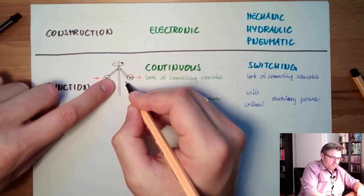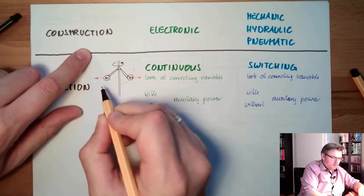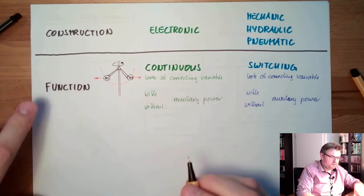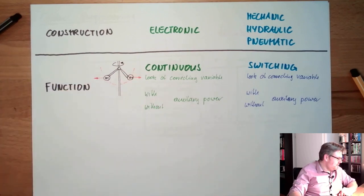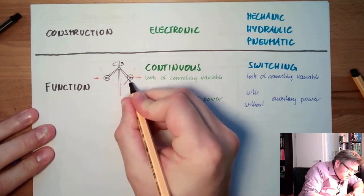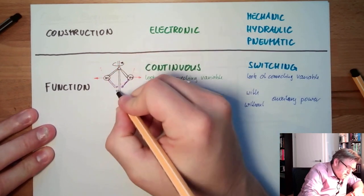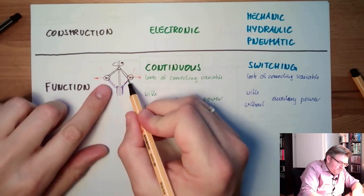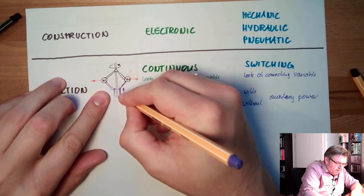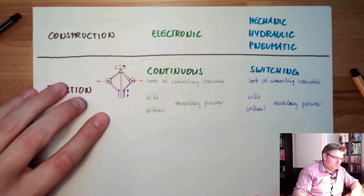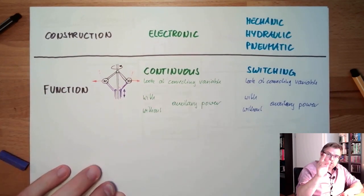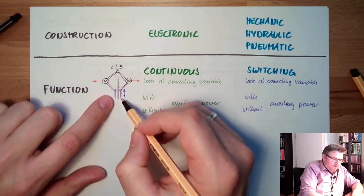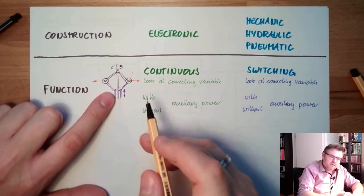If it's stationary, the masses hang down. If it starts to turn, the masses slowly go up and outward. The faster it turns, the more outside these masses will be — simply because of centrifugal forces. This movement of the masses I can use by adding rods to them connected to another shaft around the inner rotating shaft. If those two masses go outside, this outer part is moved up; if they go down, it moves down. I can use this movement to adjust the throttle valve. If the speed is too high, it moves up, closes the throttle valve a little bit, and the speed limits itself at a certain point.